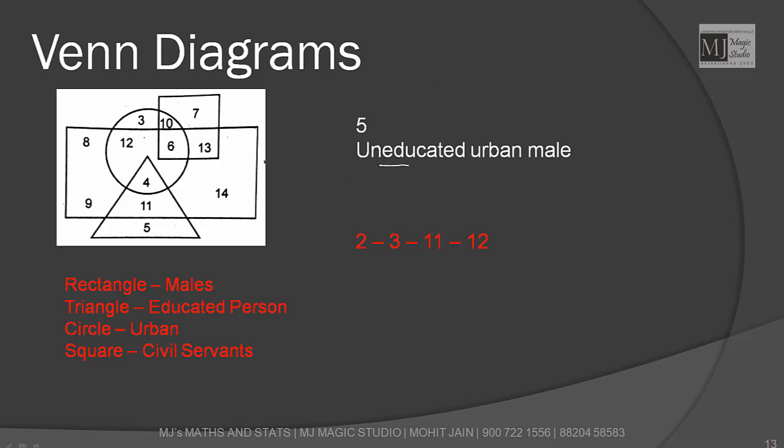Uneducated means we are looking for minus T. Urban is C. Male is R. This is C + R - T. Let's start with C. In C I have 3, 12, 10, 6, 4. Plus R - in R is only 12, 6, 4.